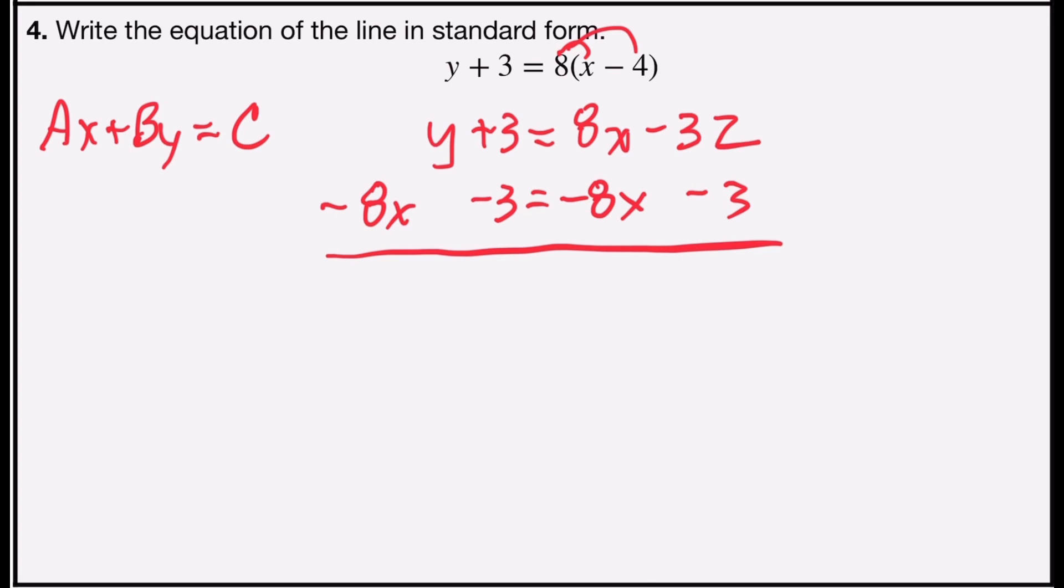So positive 3 minus 3 is 0. That leaves me with negative 8x plus y equals, on the right side, 8x minus 8x is 0, and negative 32 minus 3 is negative 35. Now I have to check.